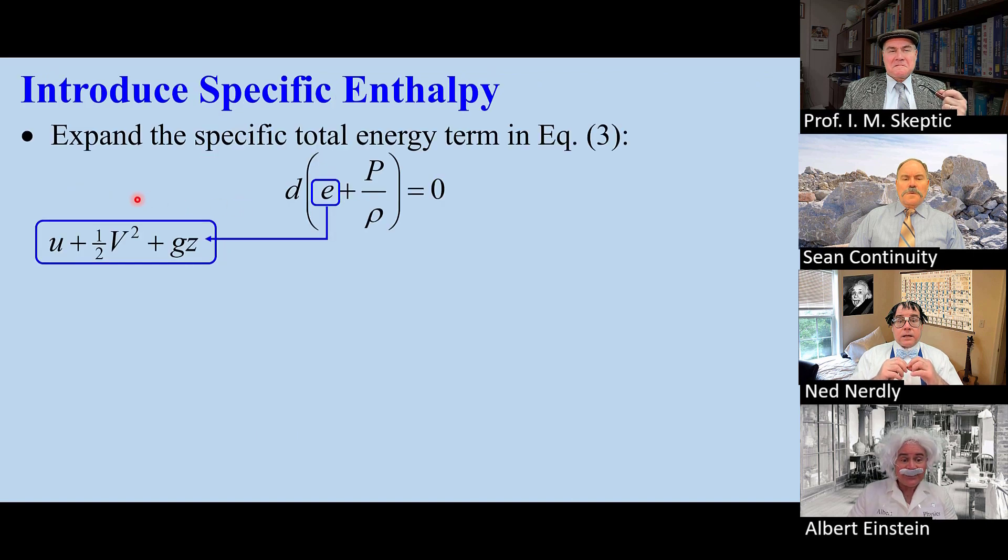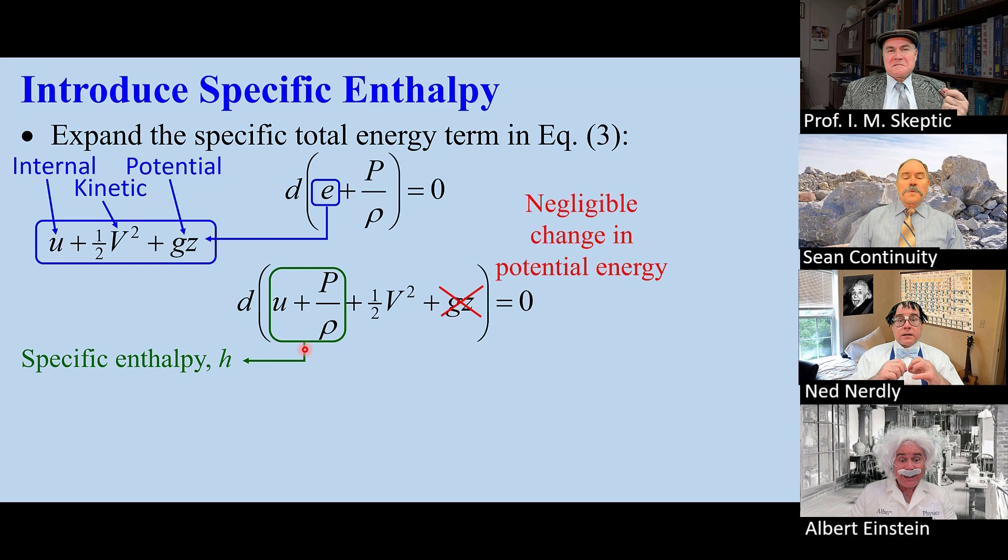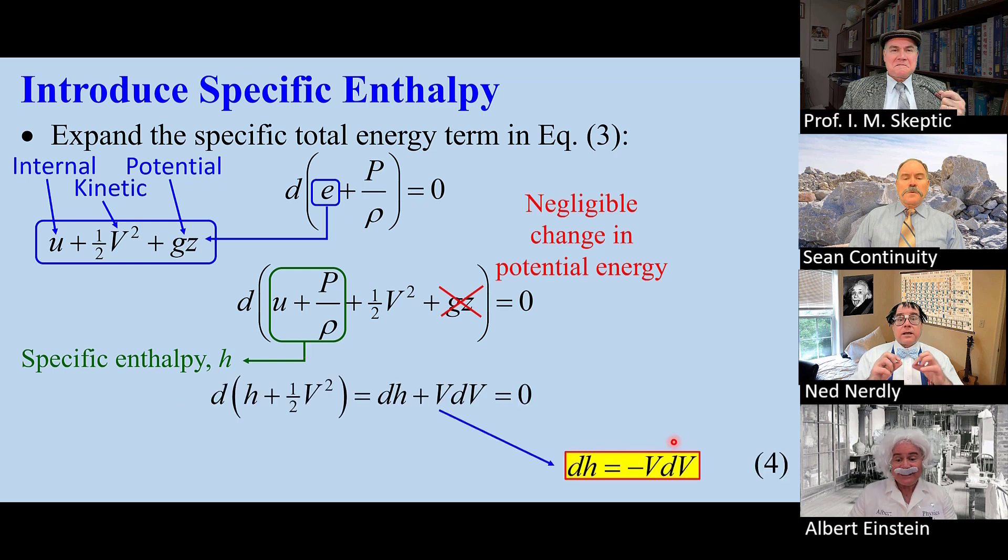We expand E into internal, kinetic, and potential energies. Thus we get this. But potential energy is negligible for a gas, and these two terms are the specific enthalpy. So we get this, which can be written as equation four: dh = -VdV.